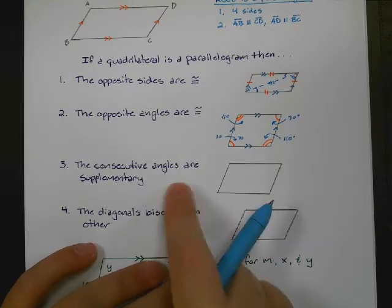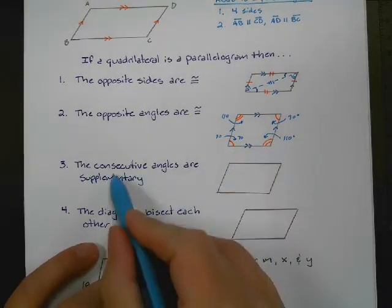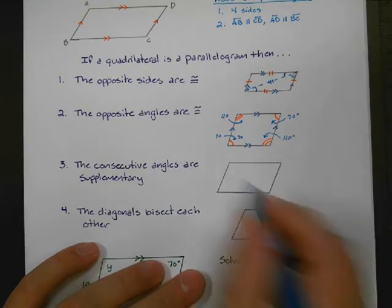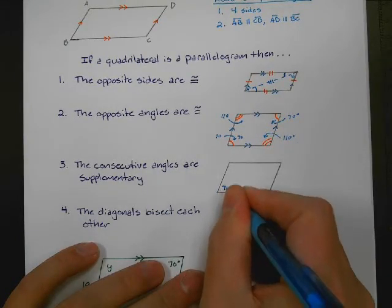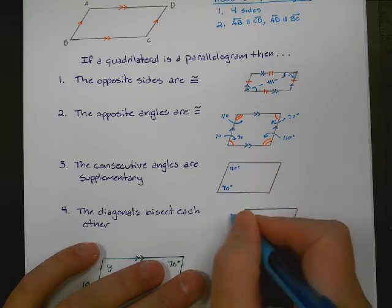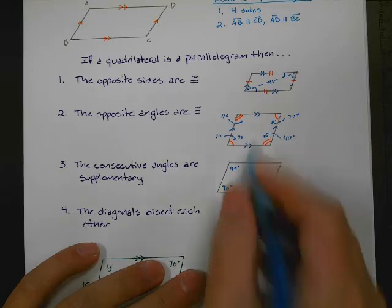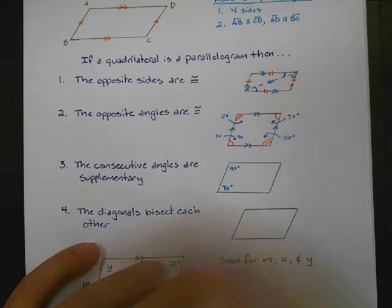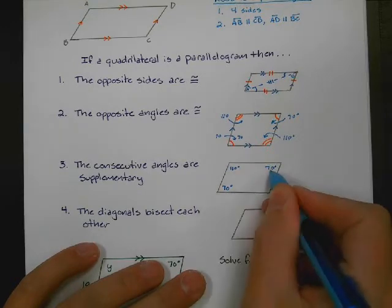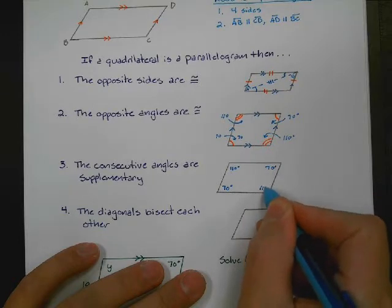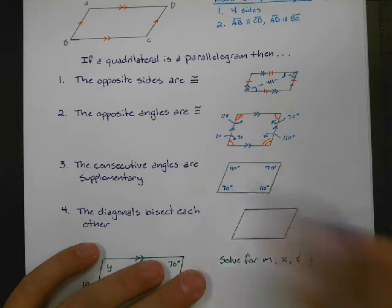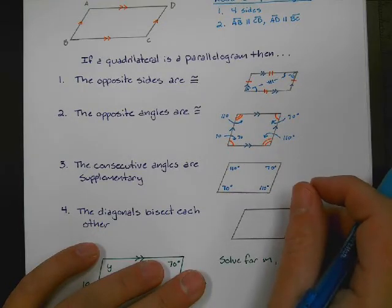That leads to the next property: consecutive angles — angles in a row — are supplementary. If one angle is 70, the consecutive angle has to be 110, because consecutive angles equal 180 degrees. We just showed why using same-side interior angles. If that angle is 110, the next is 70 because they are same-side interior angles, so angles in a row must add up to 180.